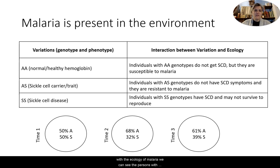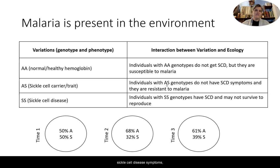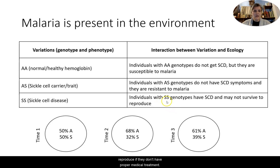When we look at the variations interacting with the ecology of malaria, persons with AA genotypes don't get sickle cell disease, but they are susceptible to malaria. However, persons with the AS genotype don't have sickle cell disease symptoms and are also resistant to malaria. Finally, individuals with the SS genotype do have sickle cell disease, and they may not survive to reproduce if they don't have proper medical treatment.